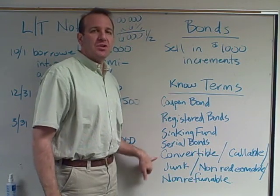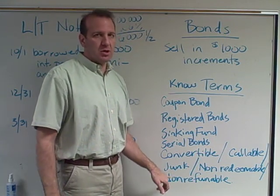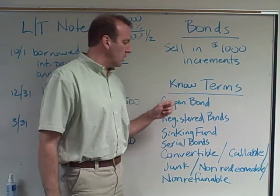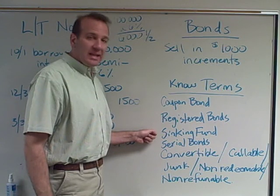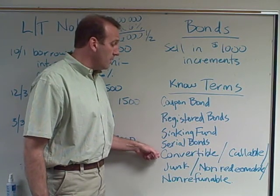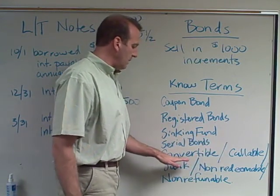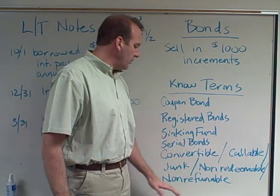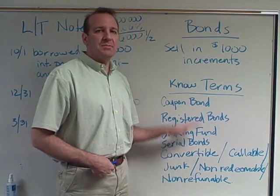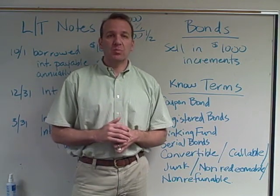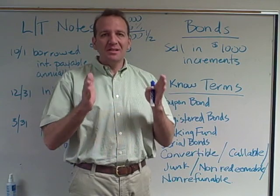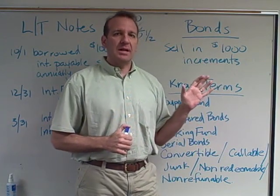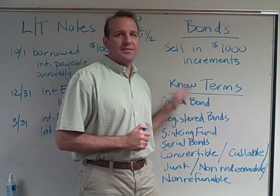There are many bond terms covered in the chapter: coupon bonds, registered bonds, sinking fund, serial bonds, convertible bonds, callable bonds, junk bonds, non-redeemable, and non-refundable. The chapter does a great job explaining all of these, so make sure you take notes and understand them. This is a short section — we've covered long-term notes and bonds, which should be enough to do well on the homework. Good luck.